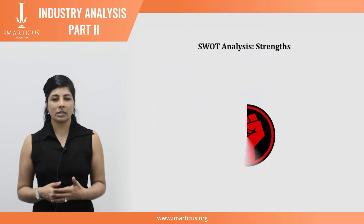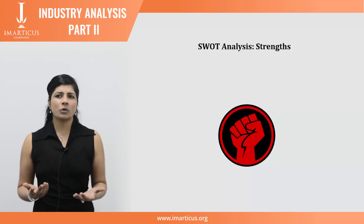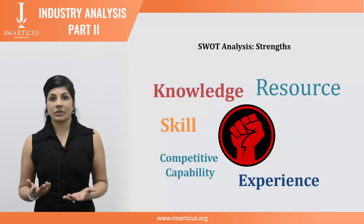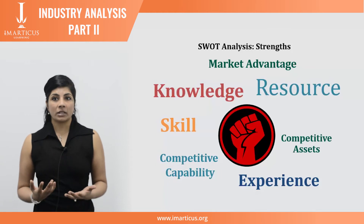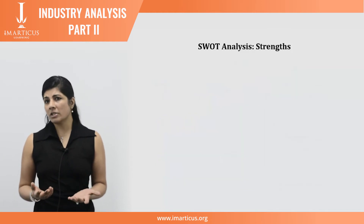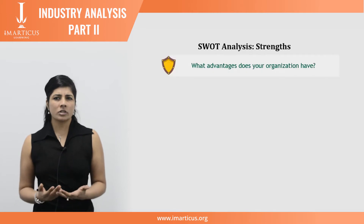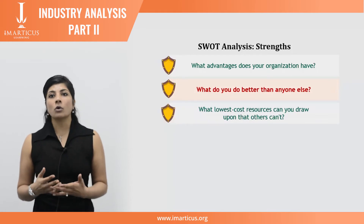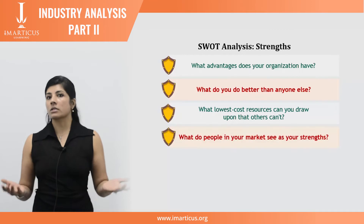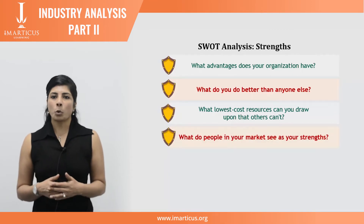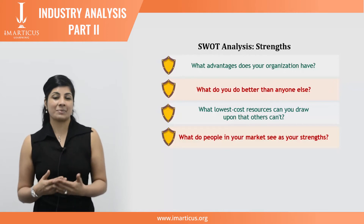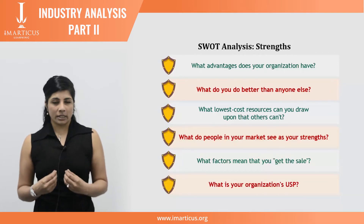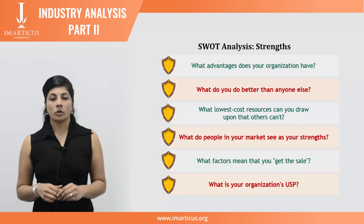Let's look at each quadrant in more detail. The strengths of a company could be skill, knowledge, experience, organizational resources, competitive capabilities, market advantages and competitive assets. To analyze strengths, ask yourself: what advantages does my organization have? What do we do better than anyone else? What's our unique or lowest cost resource that others can't draw upon? What do people in my market see as my strengths? What factors help me get the sale? And what is my organization's unique selling proposition — USP?